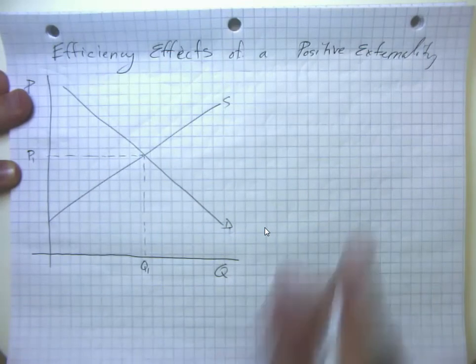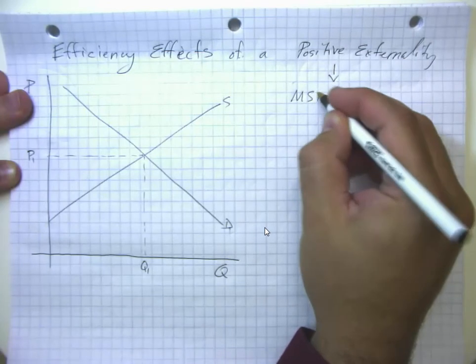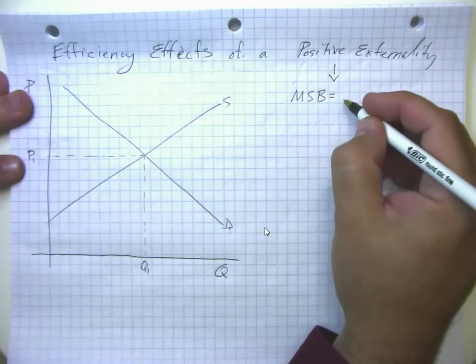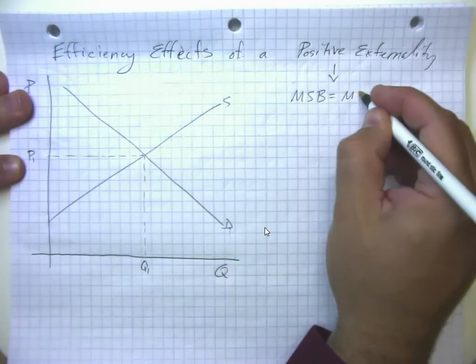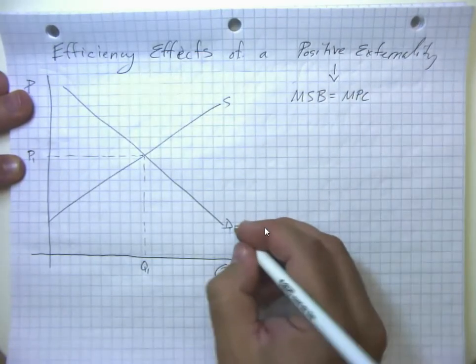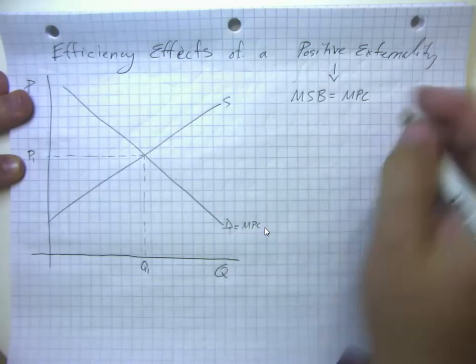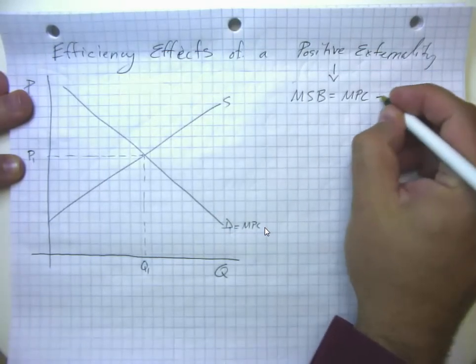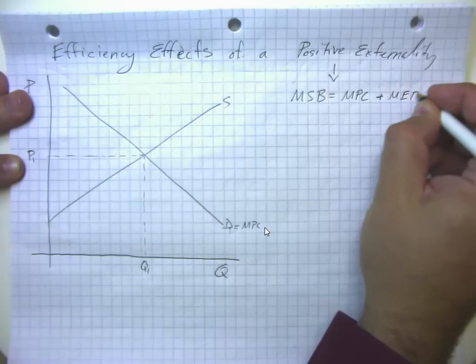Remember that when we have a positive externality, the marginal social benefit, the actual benefit from the consumption or production of the product, is the regular old private benefit that people get. That's what builds the demand curve and determines whether individuals and households are ready to buy the product. But there are then some external benefits.